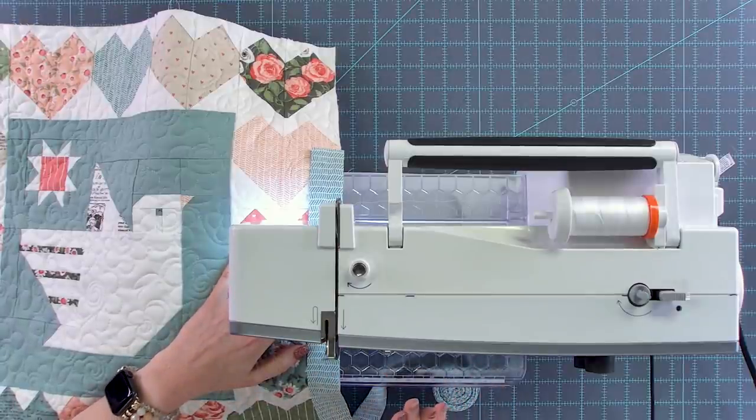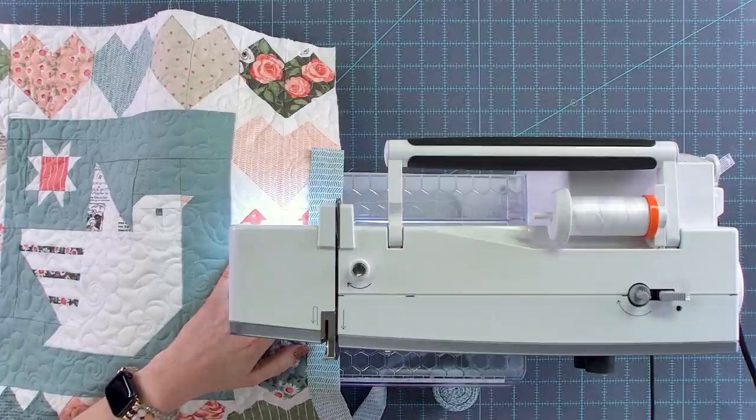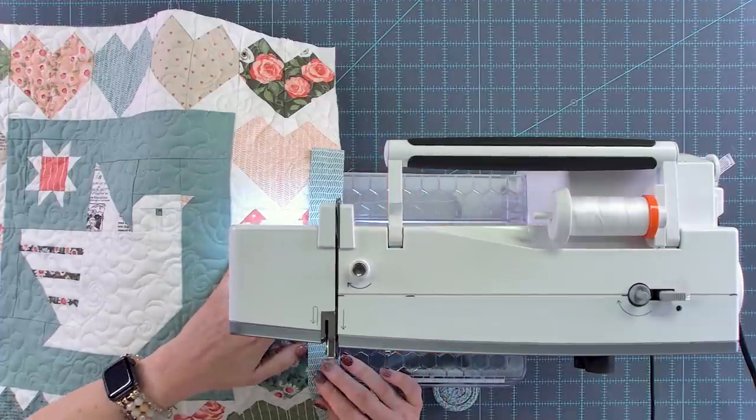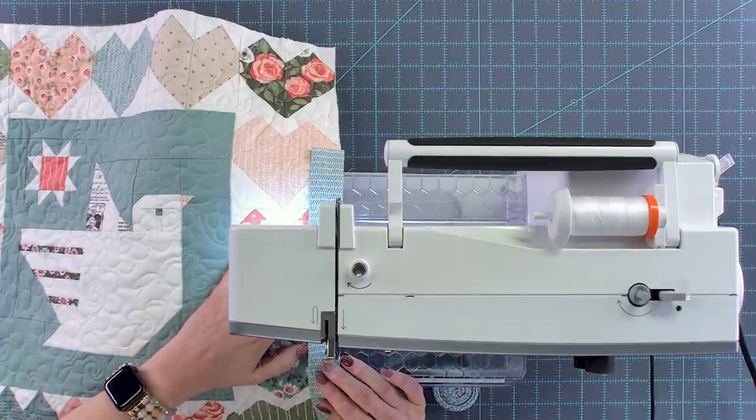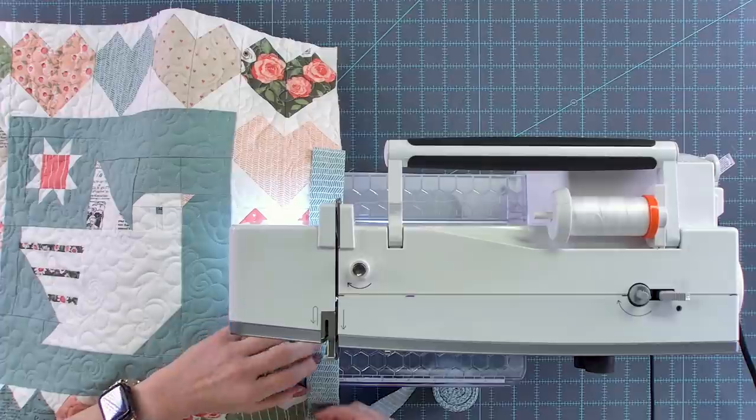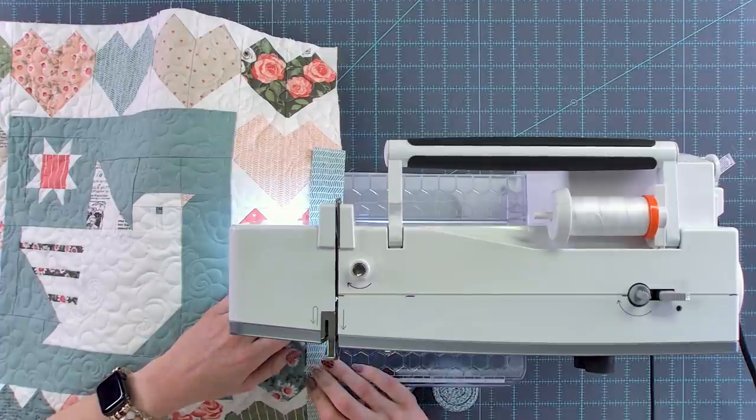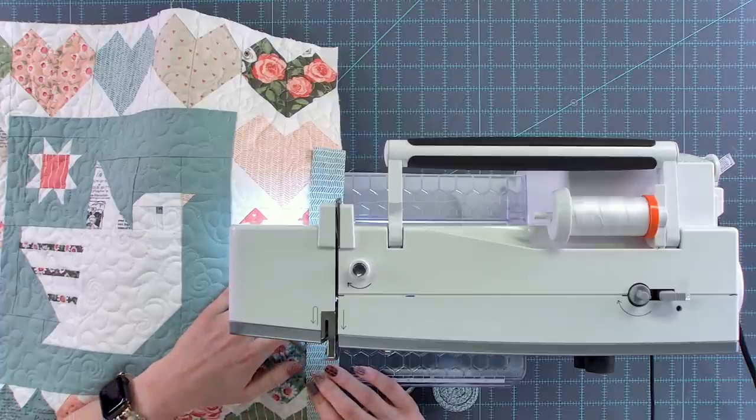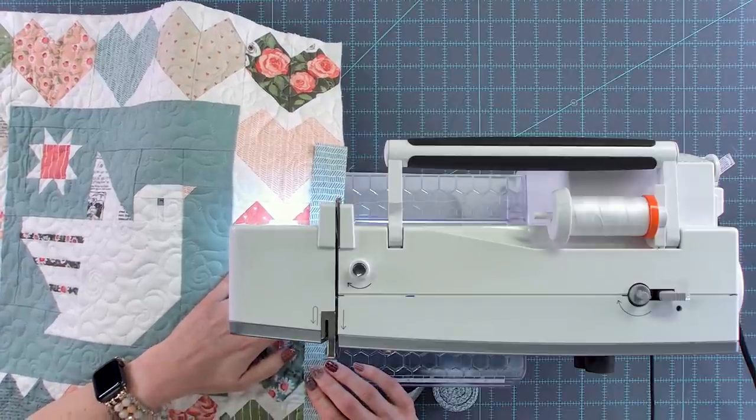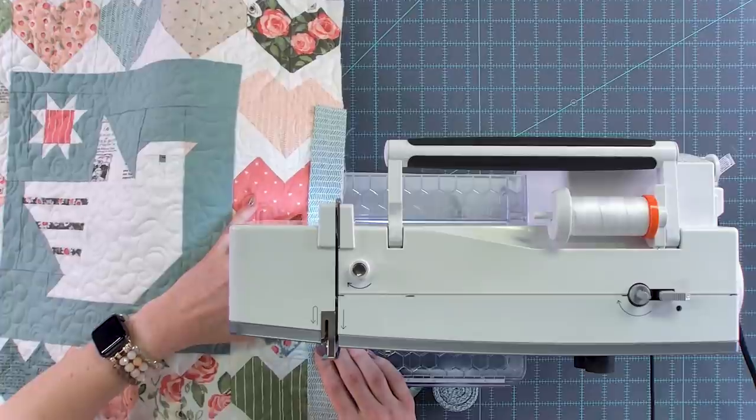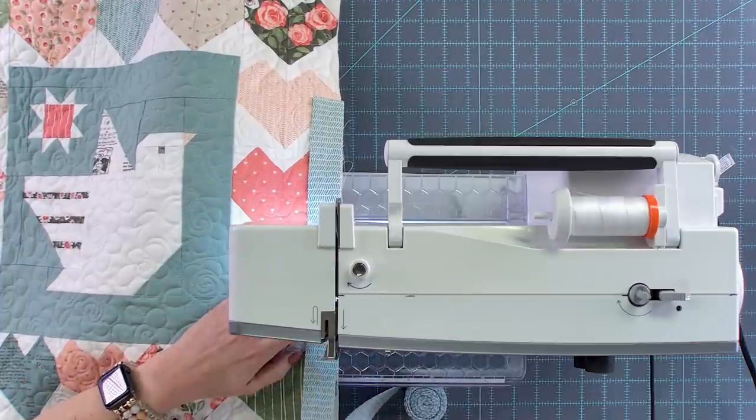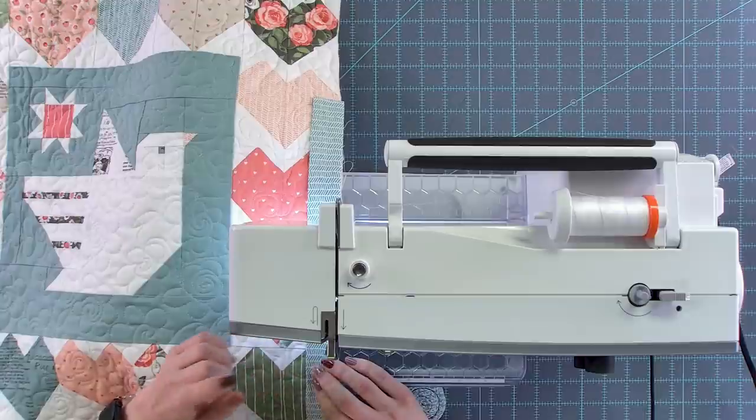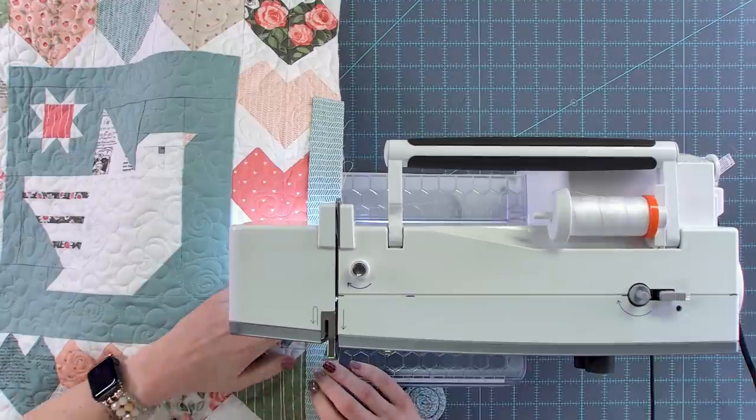No matter what you do you just want to be 100% consistent all the way around. So if you do quarter inch make sure you're quarter inch. If you're three eighths, three eighths, just whatever you do consistency is going to be the key. I also recommend using the needle stop down feature so that the needle will stay in the project every time you pause.